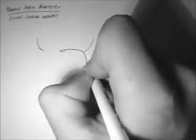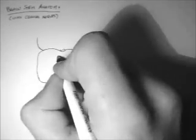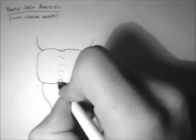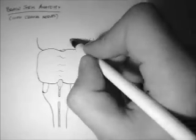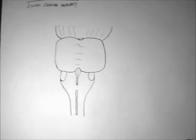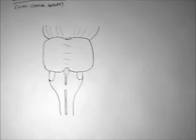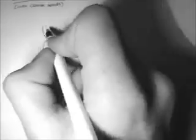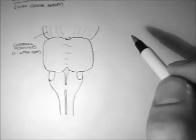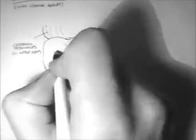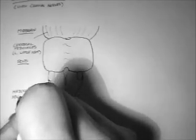I'll start off by drawing my brain stem — this is the view from the front. Now to begin with I'll put in some labels. Here are the cerebral peduncles, which is Latin for little feet — so they're the little feet of the cerebrum, which is the brain — and they're the white fibre tracts that run up to the brain here. Now I'll label my sections: there's the midbrain, here's the pons, and here's the medulla oblongata.